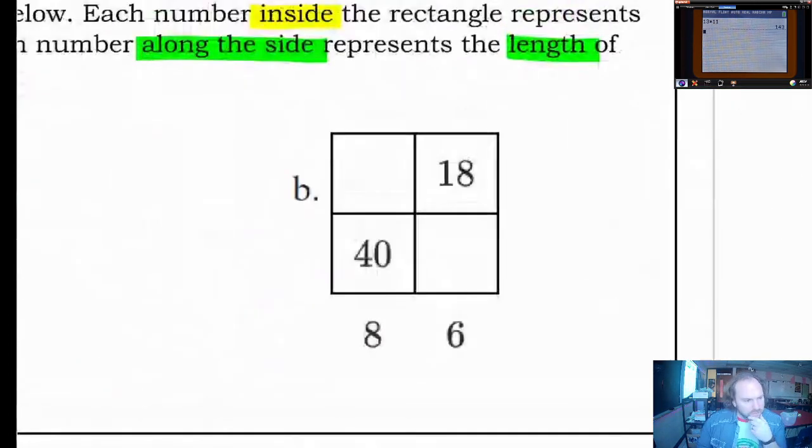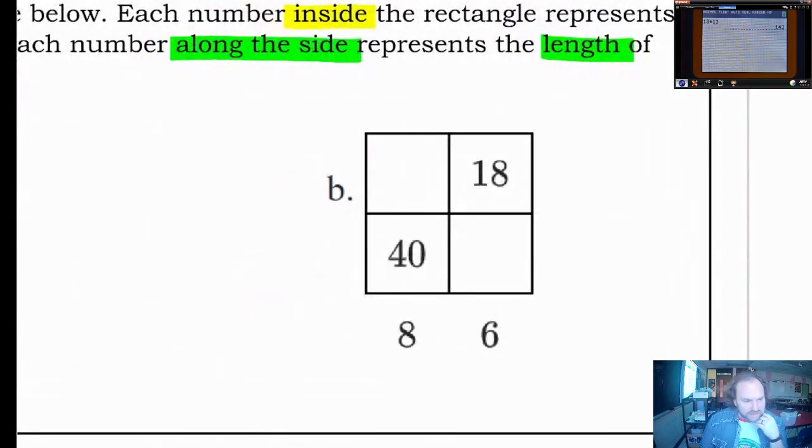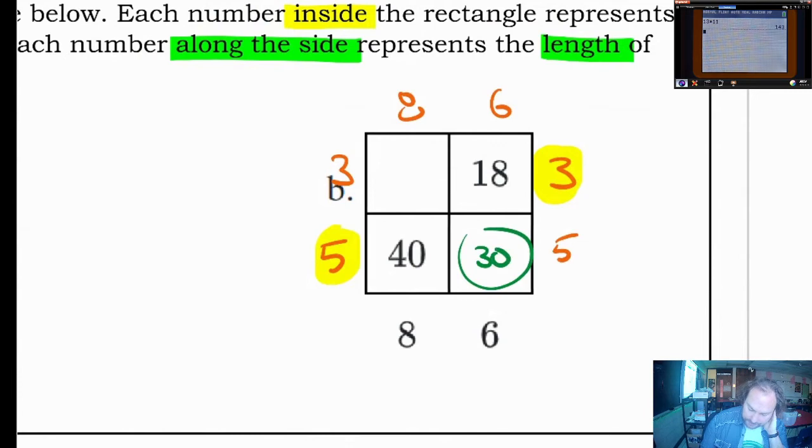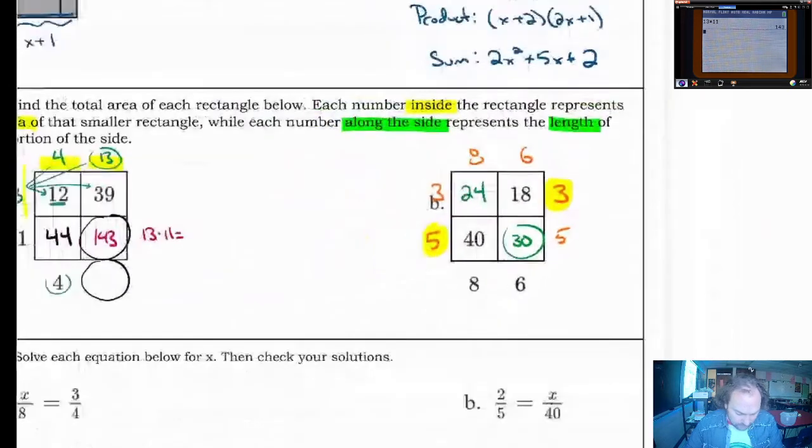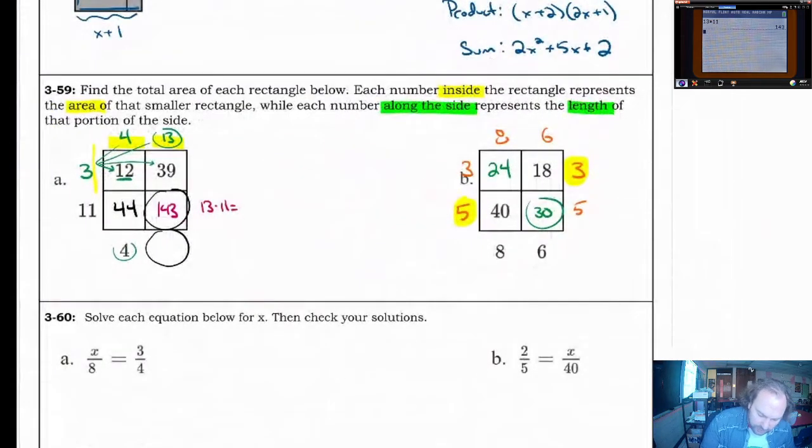Question B is going to be very similar. Again, we kind of got to work backwards on a few things. We don't really have anything we can fill in yet. We can fill in the sides, though, here and here, because I know that 8 times 5 is 40. I also know that 6 times 3 is 18. So that will be 3 over here also. You can fill in all the sides if you like since they are kind of the same across the rectangle. So 6 times 5 is going to be, in this box, 30. And 3 times 8 is going to be 24 up there in that box.